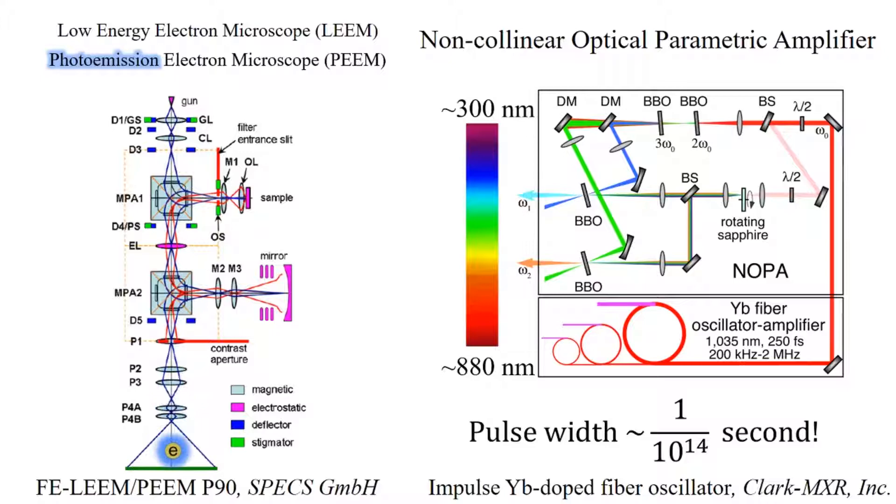The excitation light pulses are as short as 15 femtoseconds, which allows us to observe electron dynamics on a femtosecond timescale. To produce such short light pulses and tune into plasmon resonance, we use a wavelength tunable femtosecond laser system, which works on a non-collinear optical parametric amplifier principle and is pumped by an impulse fiber laser system that is manufactured by Clark MXR.